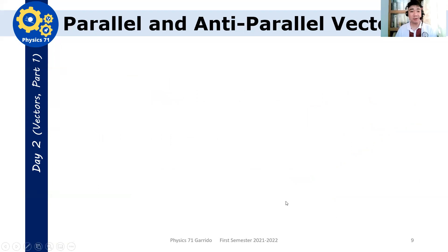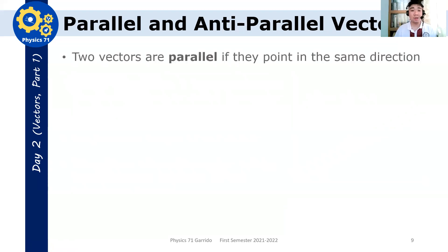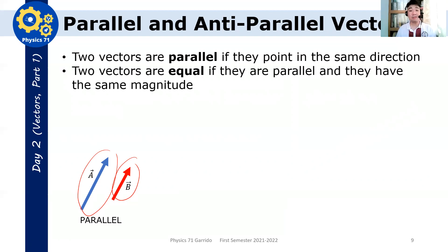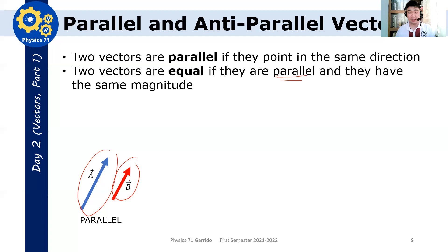Now, let's go to parallel and anti-parallel vectors, because these are terms you will encounter throughout the course. Two vectors are parallel if they point at the same direction. For example, if you have vector a and vector b pointing in the same direction, then a and b are parallel to each other. Two vectors are equal if they are parallel — so they should point at the same direction — and they have the same magnitude. In the first example, a and b are not equal because the length of a is larger than b, but in the second example they are equal because their lengths are the same.